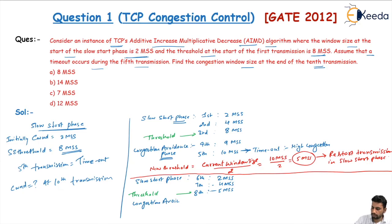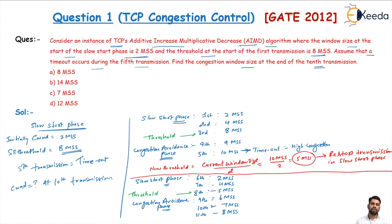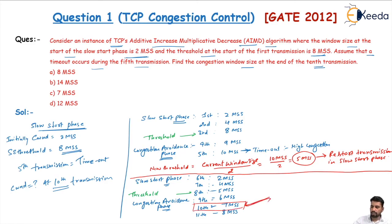At the threshold, the slow start phase stops and the congestion avoidance phase starts. The ninth transmission uses additive increment giving 6 MSS, and the tenth transmission is 7 MSS. The eleventh would be 8 MSS, continuing to increase until the maximum sender window size or until congestion is detected. The question asks for the congestion window size at the 10th transmission, which is 7 MSS.